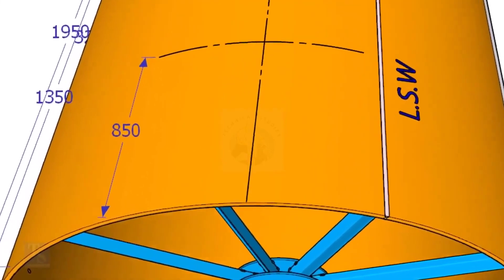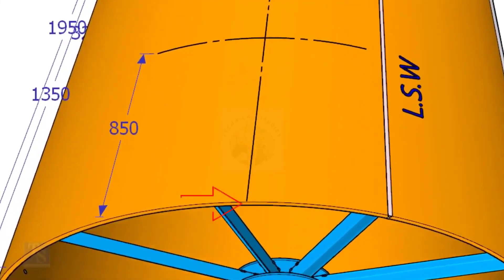Mark this distance on the end of the shell. Mark the same distance, roughly 850 millimeters away from the end of the shell, and draw a line.